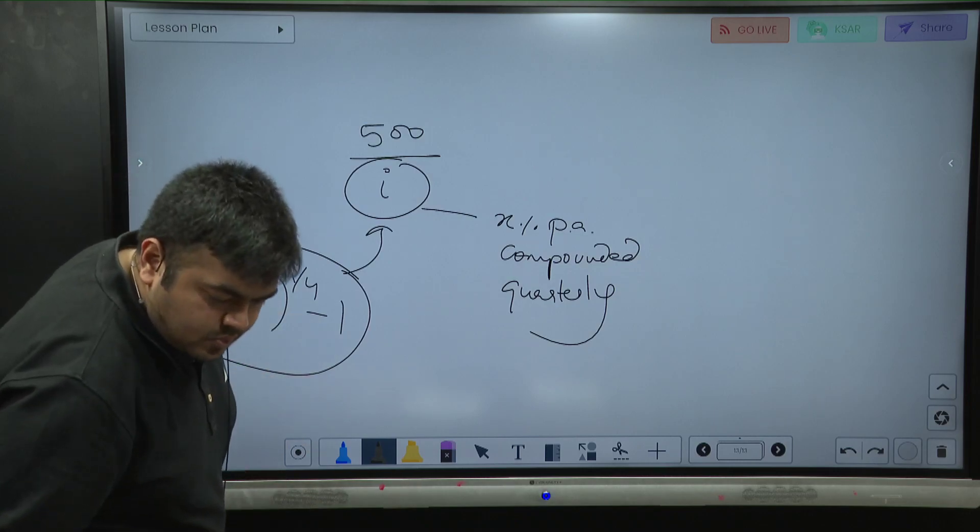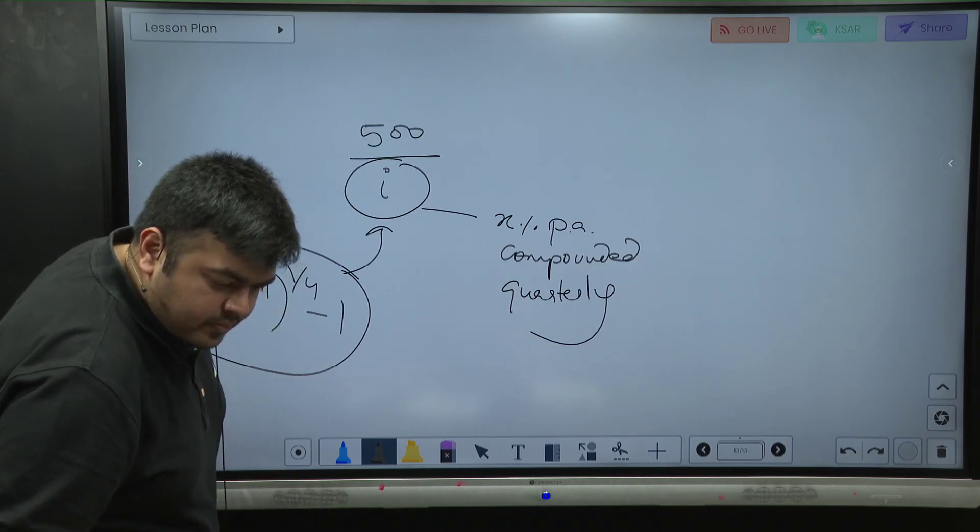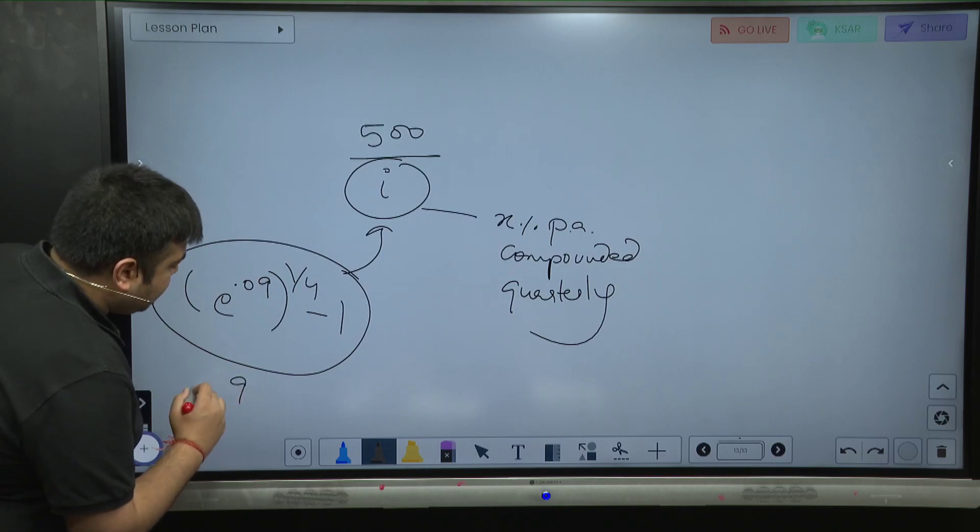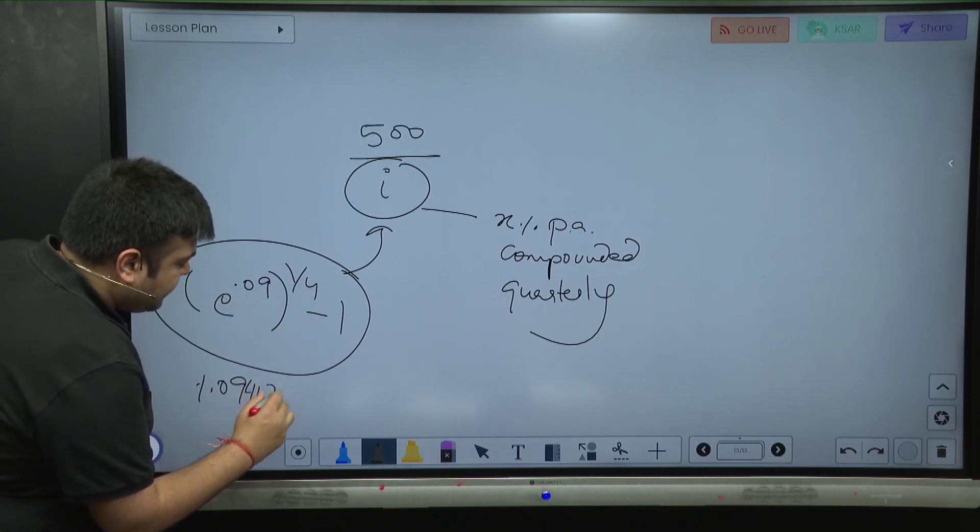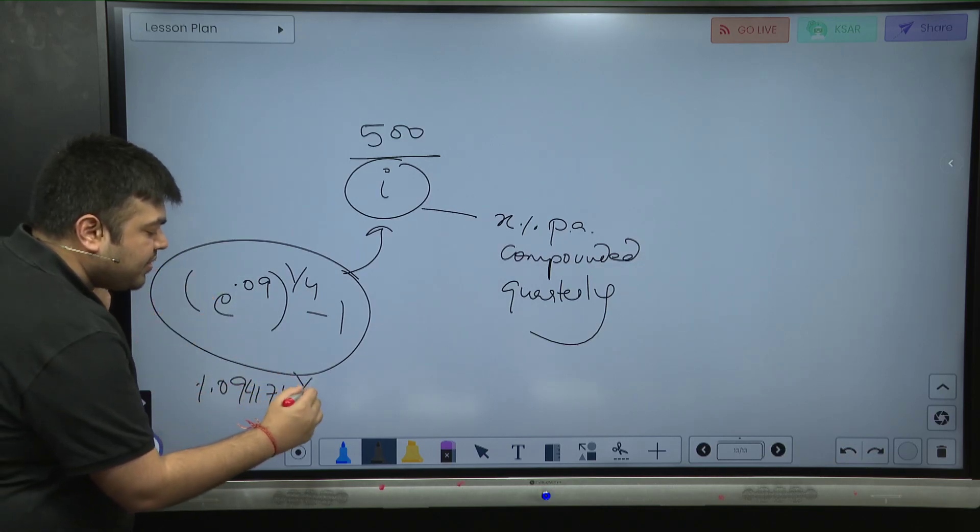So, one becomes 1.09417174. This is what one becomes in one year. So in one quarter, to the power one fourth.